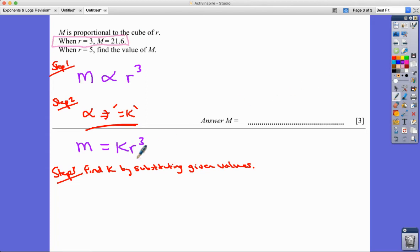The function of that is that you are supposed to substitute those in at step three. And it will allow you to find the unknown K. So if M is 21.6 here, that's equal to K times three to the power of three. I'm going to need my calculator in a minute.